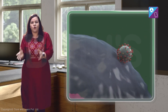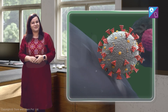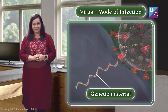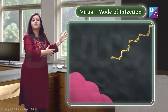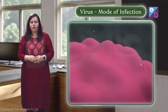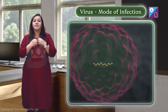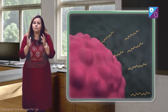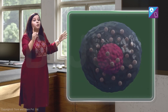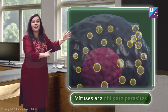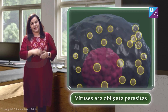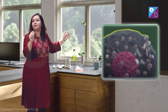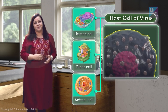They simply get the host cell to do their bidding. When they bind to the host cell, they inject their genetic material. The genetic material hijacks the machinery of the host cell, forcing the cell to make several copies of the virus. Since viruses are completely dependent on a host cell, we say that viruses are obligate parasites. And this host cell could be a human cell, a plant cell, or an animal cell.